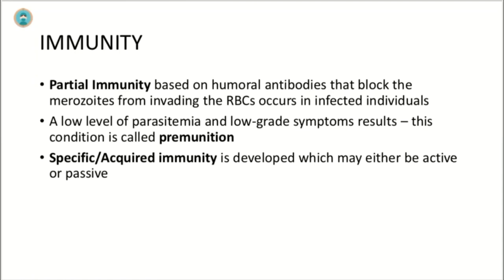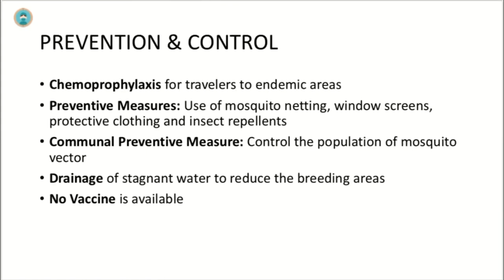Immunity developed against malaria may be either active or passive. Partial immunity based on humoral antibodies that block merozoites from invading red blood cells occurs in infected individuals. This results in a low level of parasitemia and low-grade symptoms, a condition called premonition.